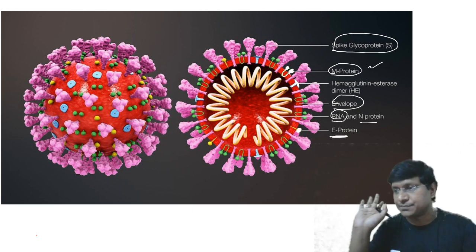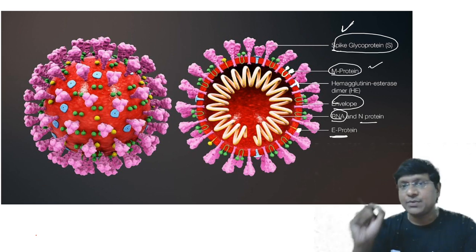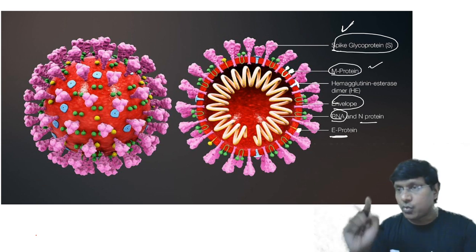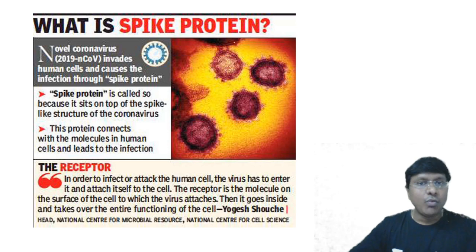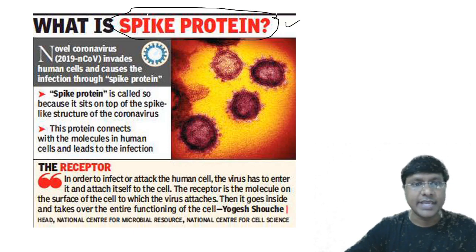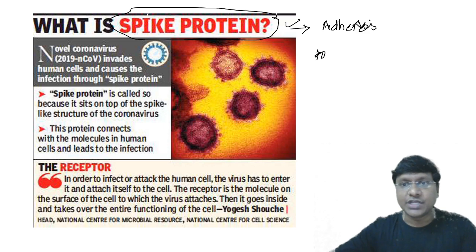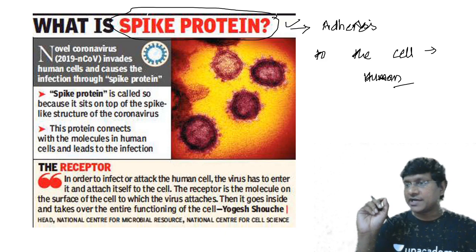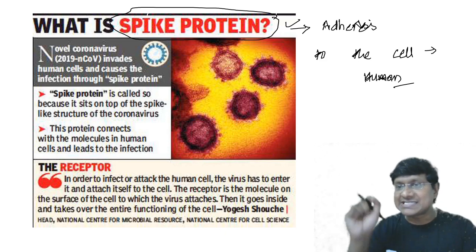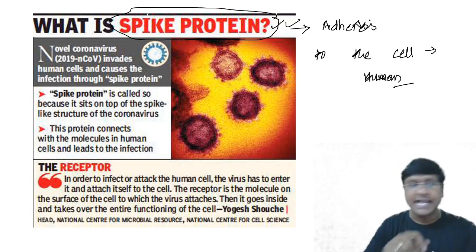Now we discuss the spike protein specifically. The spike protein present on COVID-19 is very important because it is the structure which adheres to and binds to the human cell. What is the structure of COVID-19 that binds to the human cell? That is your spike protein.